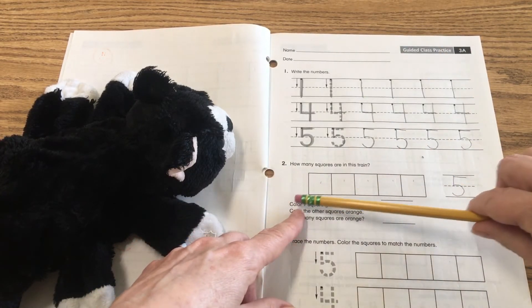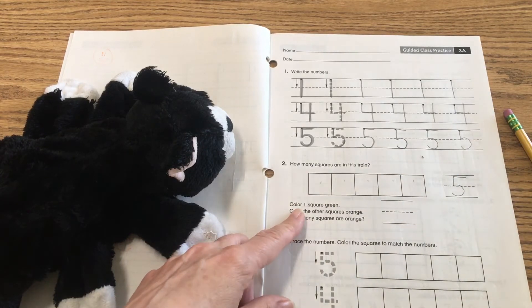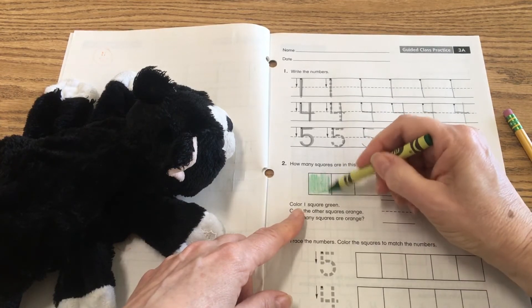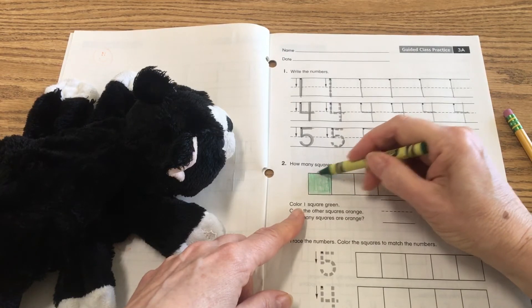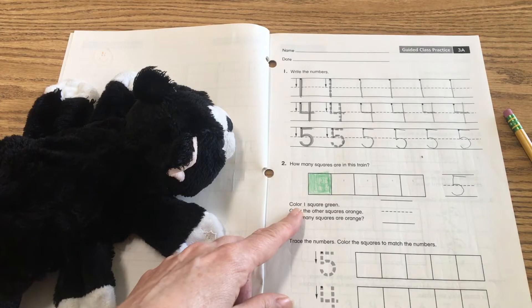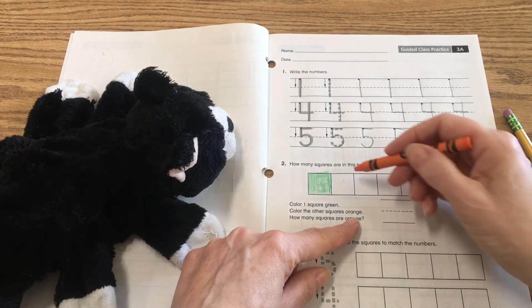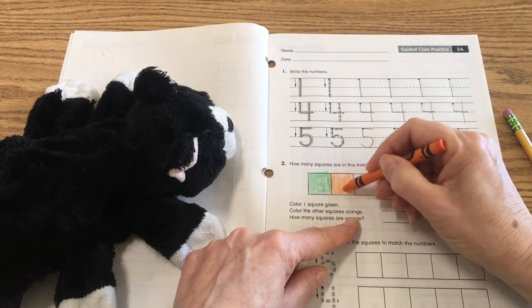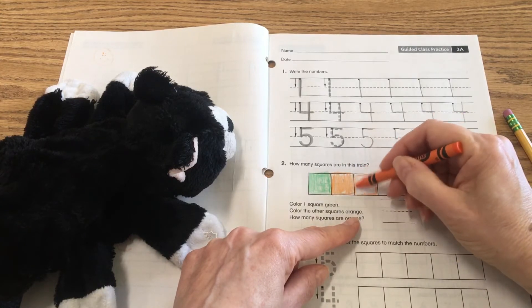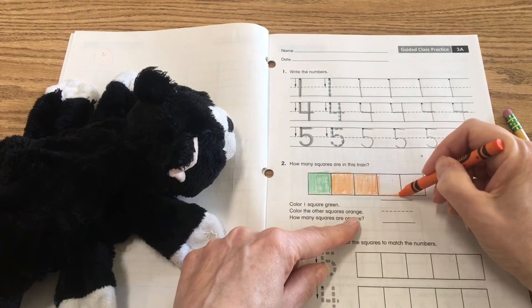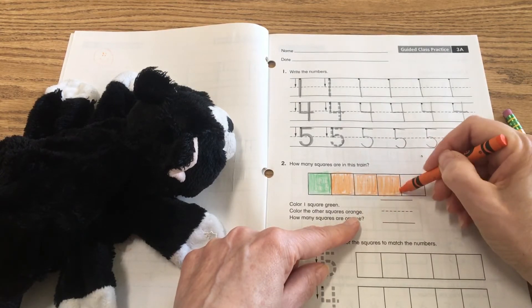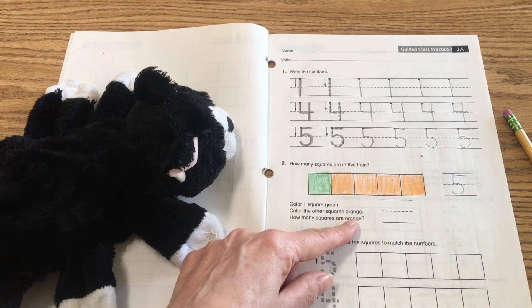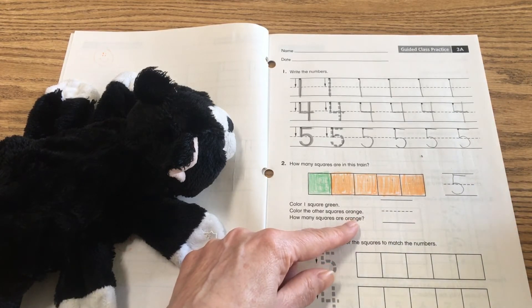I'm not quite done yet because it says color one square green. So I'm going to pull out my green crayon and I'm going to color in one of my squares green. Remember to pause any time if I'm going too fast. And then it says color the other squares orange. So it needs me to color all the rest of these squares. So there's one, two, three, four. Okay. So pause if you need more time and then rejoin us.